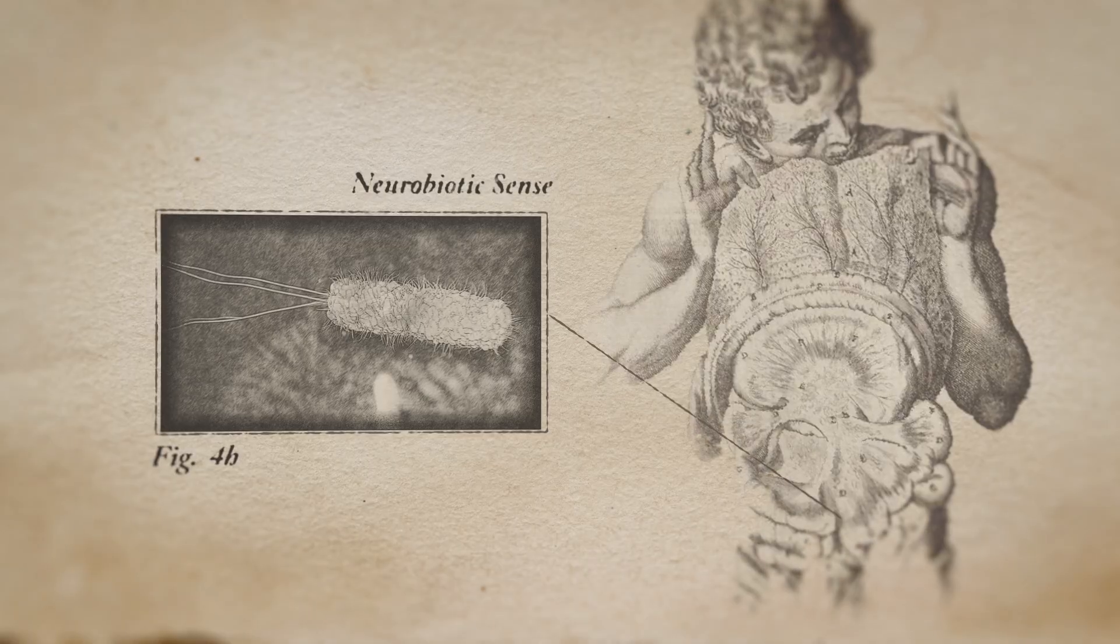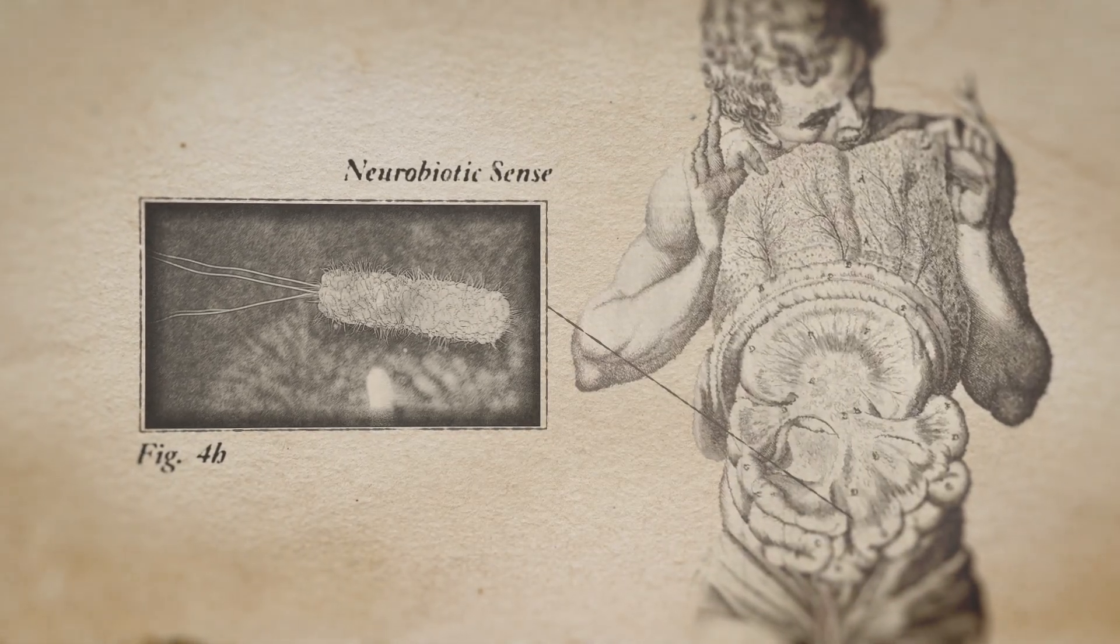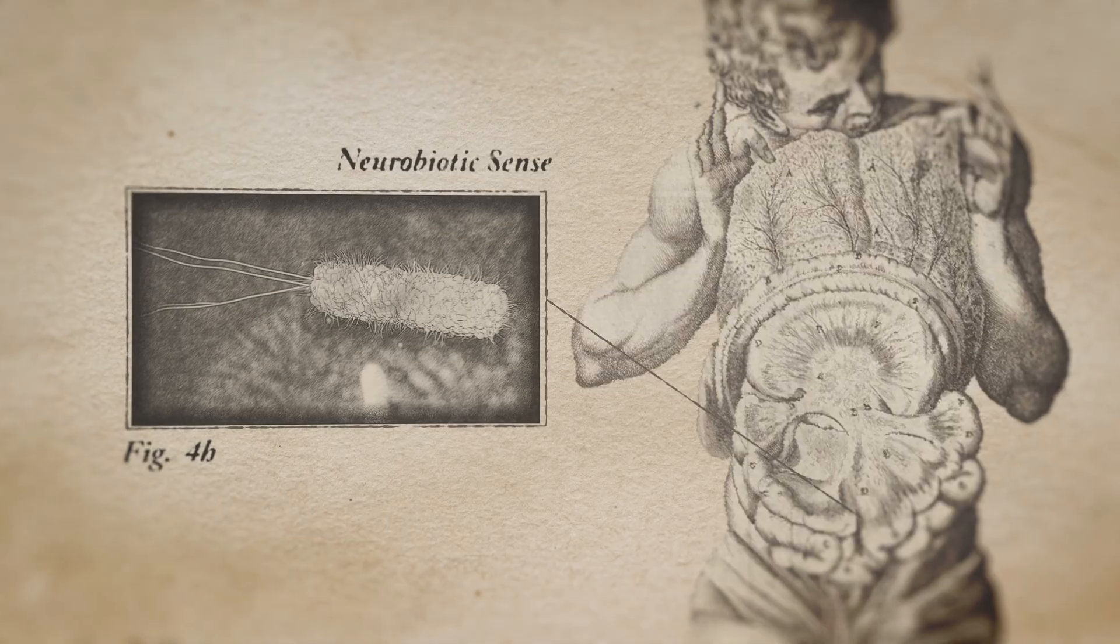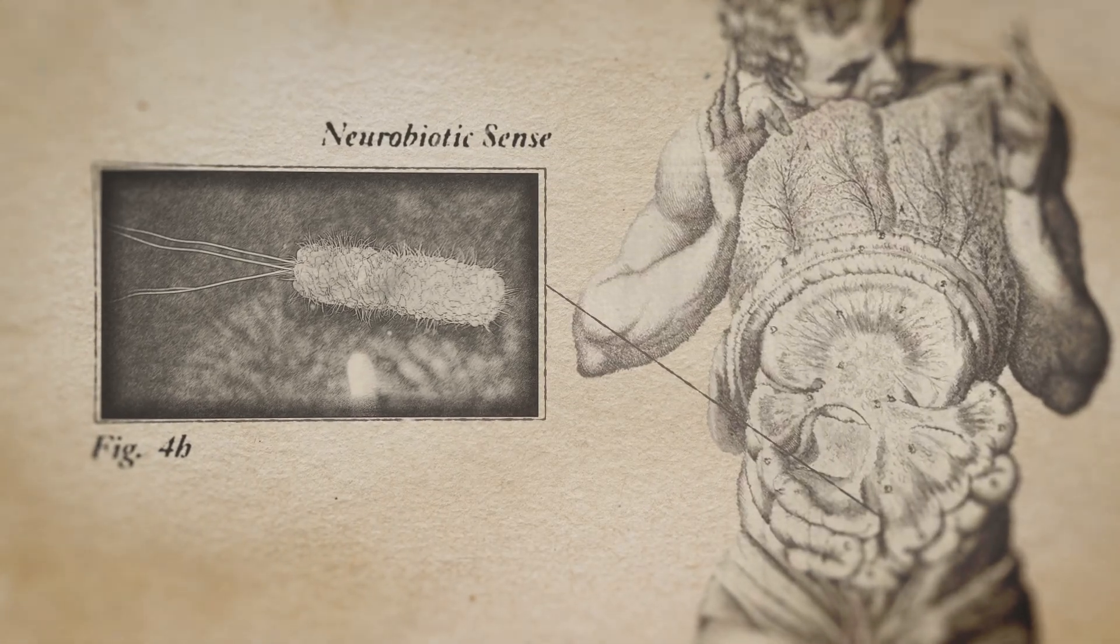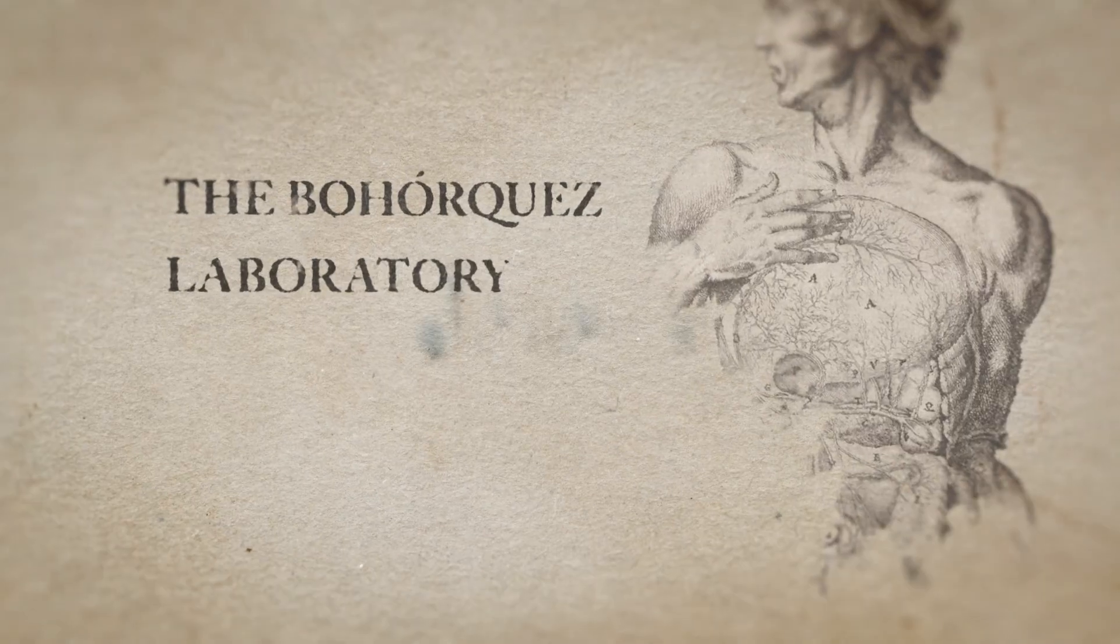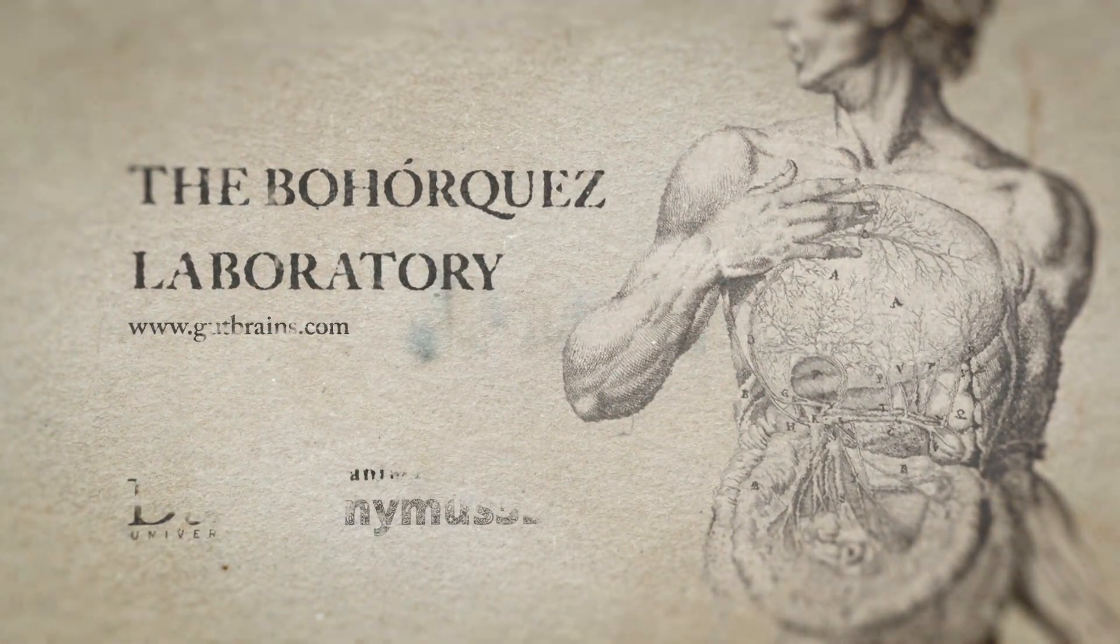We call this sense, at the interface of the biota and the brain, the neurobiotic sense. This neurobiotic sense regulates feeding. Just as organisms rely on their senses to navigate the external world, they also use their gut umwelt to adjust their behaviour.